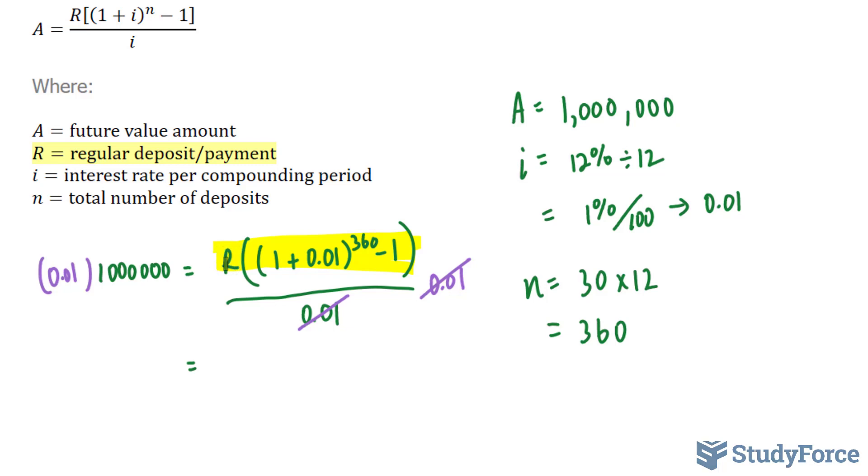Now what we're left with is this expression on the right side. We need to find out what R is. Now to get rid of everything else but R, we have to divide both sides by this.